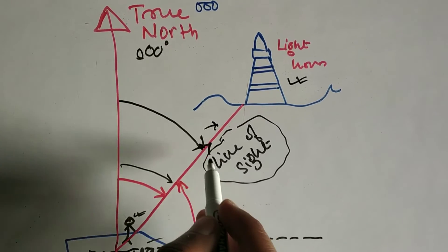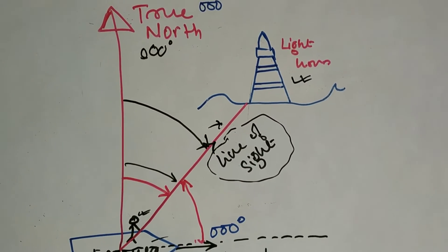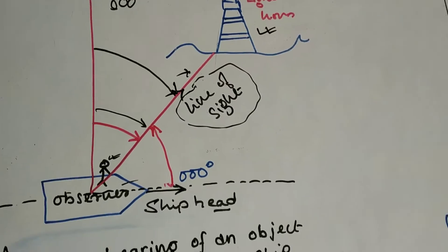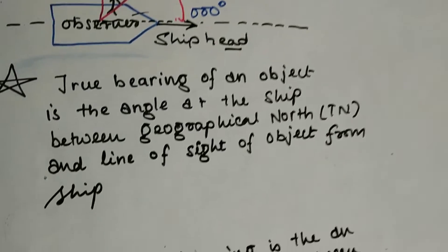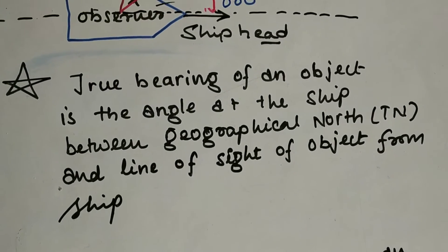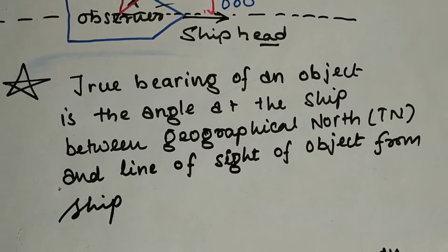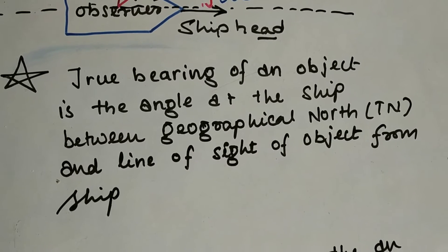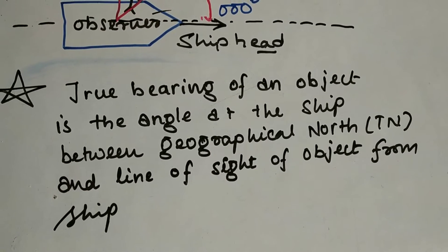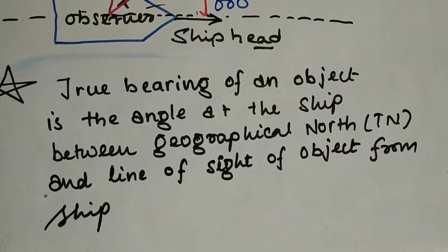True bearing of an object is the angle at the ship between geographic north — that is true north — and the line of sight of the object from the ship.